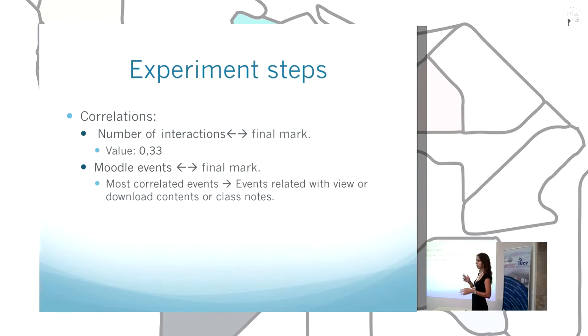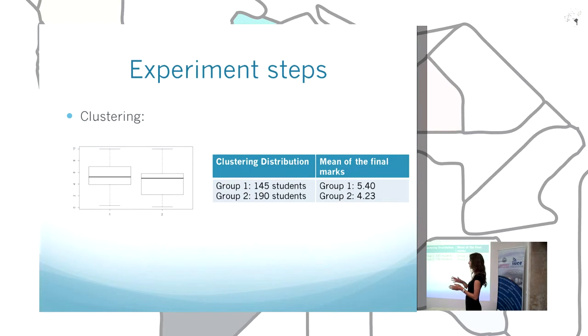Moodle has different types of events based on what type of interaction the students did. There are view events, writing formulas into some tests or quizzes. We tried to detect what type of events are more related with the final mark, and we discovered that they are events related with viewing or downloading contents or class notes. So from this moment, we only took this type of interactions to calculate our experiments.